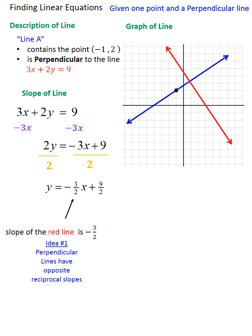Now, according to idea number one, if we know that that line has a slope of -3/2, then we know that the perpendicular slope would be the opposite reciprocal of that, or positive 2/3.